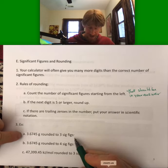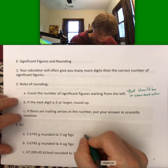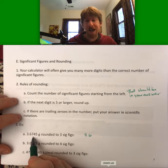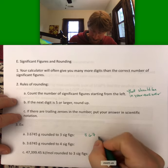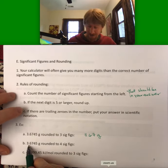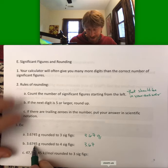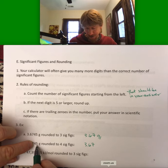So if we take this number here and round it to three sig figs, we're going to start at the left: one, two, three. So that's going to be 3.6, and then this seven has a four after it, and that four is smaller than five, so it's just going to be 3.67 grams. Rounded to four sig figs, it's going to be 3.67—well, the last digit is going to be this place, this four. But since there's a five here, we're going to round up to five.